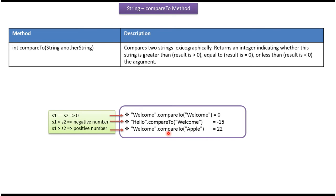Here, using compareTo method, I am comparing the string 'welcome' with the string 'apple'. And it returns 22, meaning the string 'welcome' is greater than the string 'apple'.